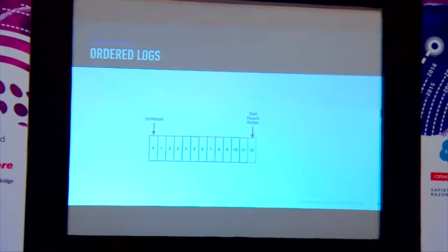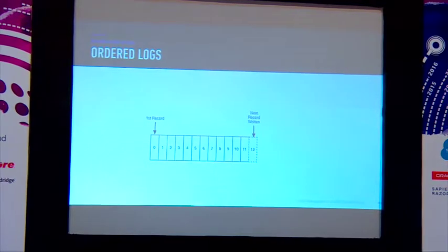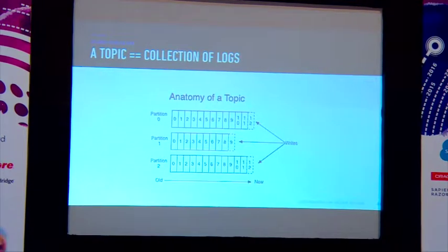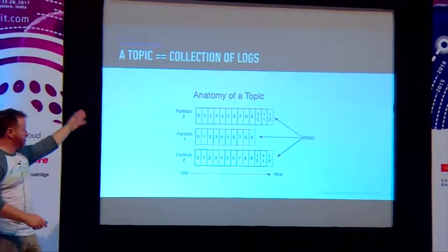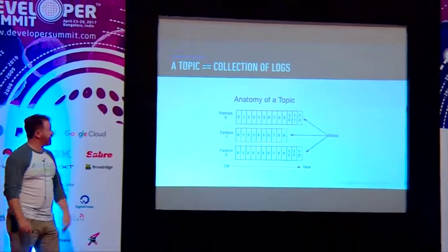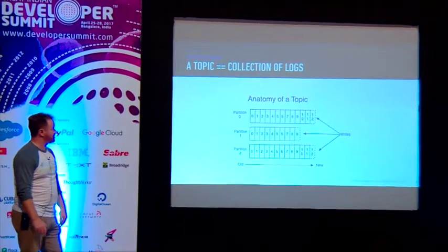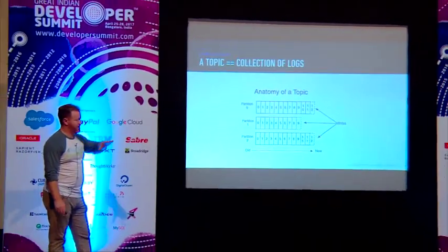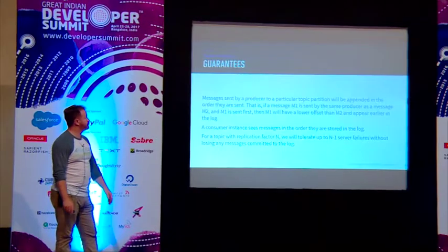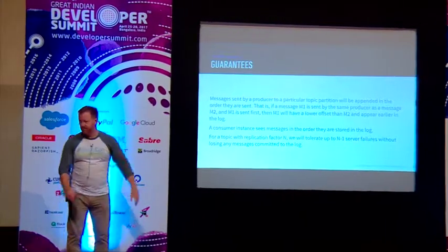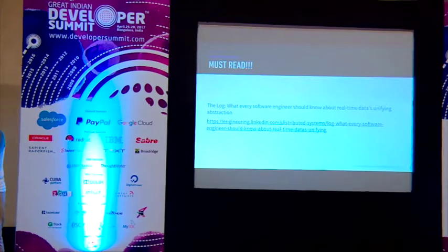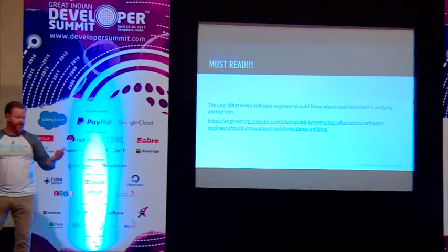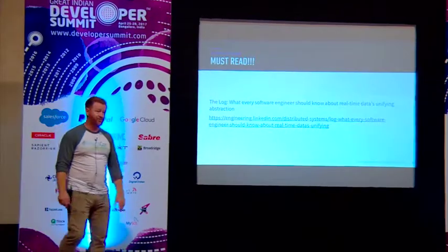You can have different clients or consumers with different needs and varying read pointers going on at the same time — a lot of really cool things you can do with Kafka. Essentially it's just an ordered log — just append, append, append. And then we have different partitions for handling high-scale writes across multiple machines, which we define as a topic. There are some guarantees that come with that.